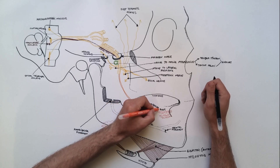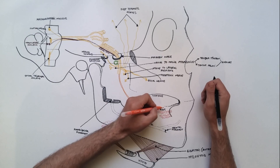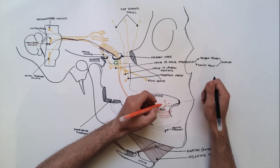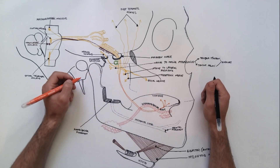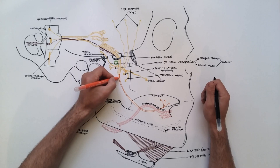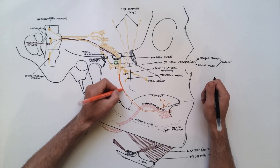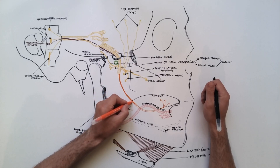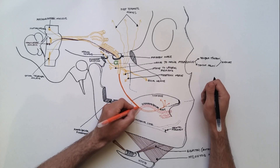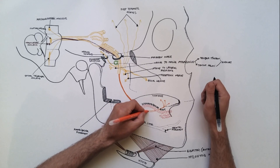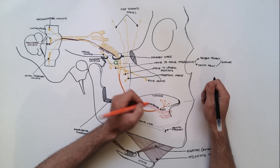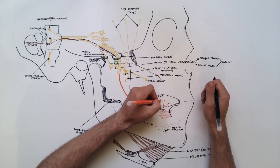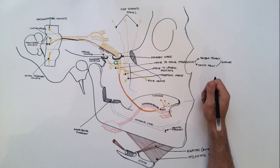The lingual nerve is sensory to the mucous membrane of the anterior two-thirds of the tongue. This nerve winds around the submandibular duct — first above, then lateral, then below, and finally medial to the duct — and divides into its terminal branches. Its distribution provides sensory supply to the floor of the mouth, lingual surface of the gum, and anterior two-thirds of the tongue. It also carries preganglionic secretomotor fibers to the submandibular and sublingual salivary glands.